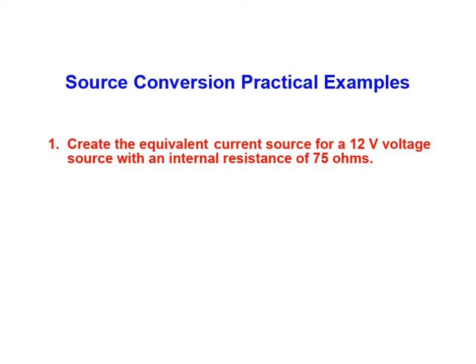In part one of our demonstration we'll create the equivalent current source for a 12 volt voltage source having an internal resistance of 75 ohms. These circuits will behave identically when a load is connected to them.